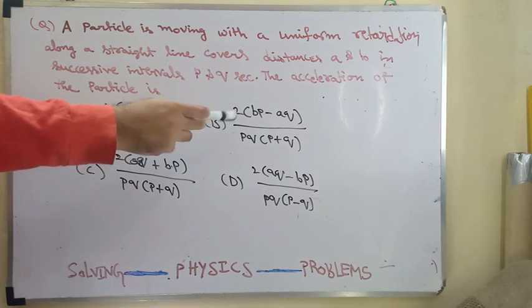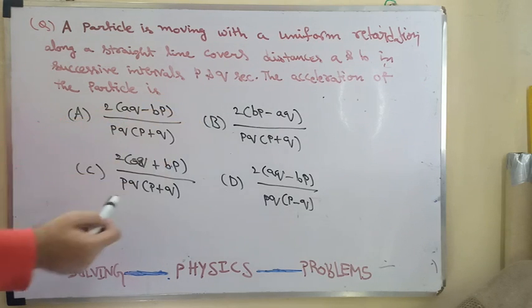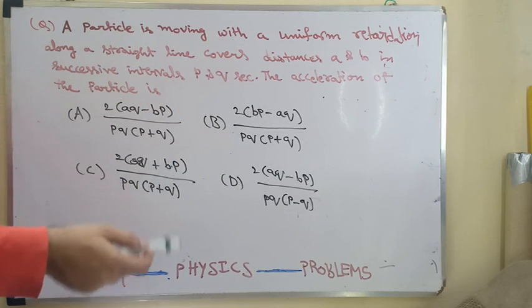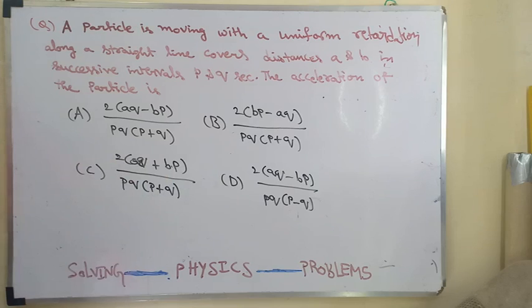2 times BP minus AQ by PQ into P plus Q, 2 times AQ minus B plus BP divided by PQ into P plus Q, and then last 2 into AQ minus BP divided by PQ into P minus Q.